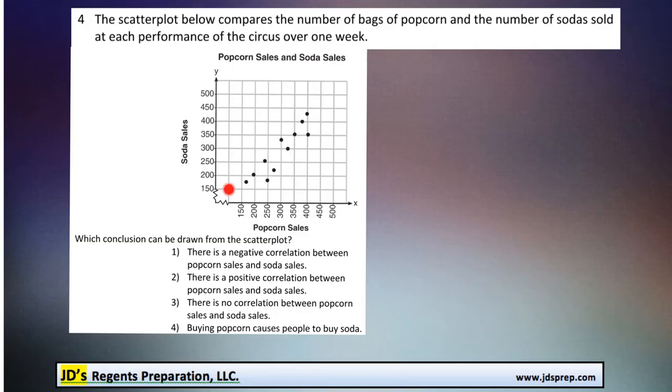We can see on the x-axis here we've got the popcorn sales, and then up to the side on the y-axis we have the soda sales. And the question is, which conclusion can be drawn from the scatter plot?